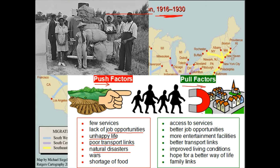Pull factors drawing people to cities include government services — grocery stores, hospitals, and agencies that help low-income individuals. If you live in a rural area, it's very difficult to access food assistance, healthcare, or education. So the poor are pulled to cities where government agencies are located. Additional pull factors include job opportunities, entertainment, better transportation, and better living conditions.